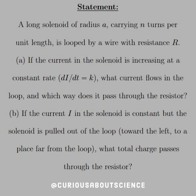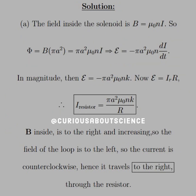If the current I in the solenoid is constant, but the solenoid is pulled out of the loop towards the left to a place far from the loop, what total charge passes through the resistor? Let's go ahead and dive in.